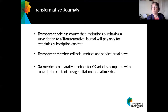There's also transparent metrics around your editorial services, such as speed to publication and acceptance rates, and how those different types of service contribute to the charge that you make for open access publishing. You also need to produce comparative metrics for open access articles compared with your subscription content in terms of usage, citations, and the online attention in the form of altmetrics.